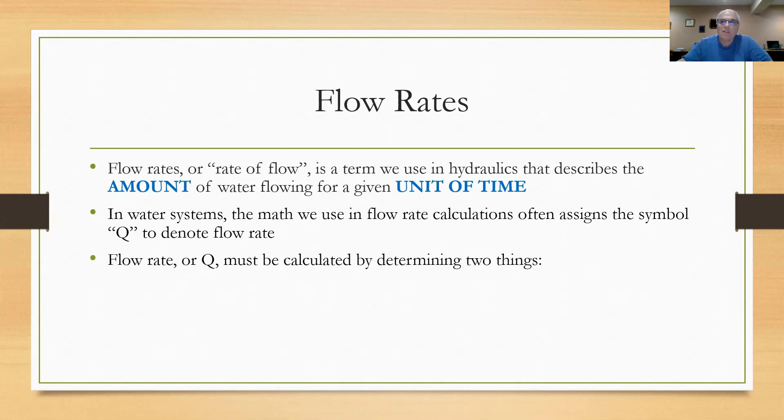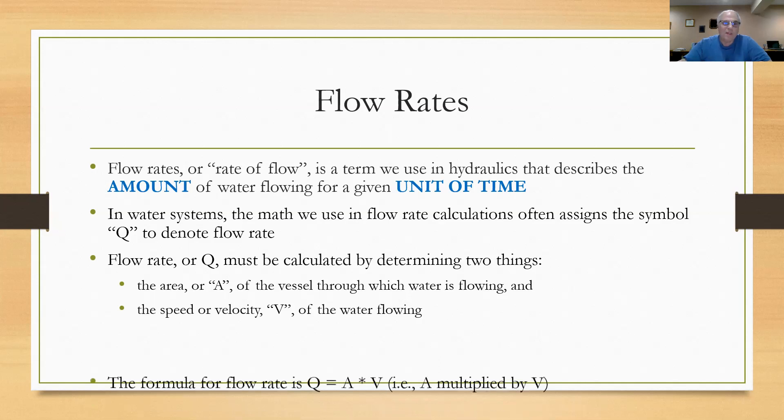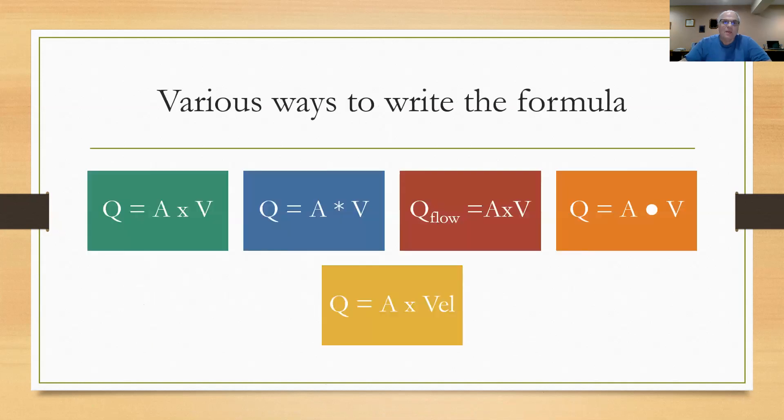So flow rate or Q has to be calculated by determining those two things. We have to get the area of the vessel that's carrying the water - it's either going to be a pipe or an open channel in a water plant. And we also have to know the speed or the velocity of the water that's flowing through that pipe or channel. So the formula that we use is Q equals A times V, the area multiplied by the velocity. They often write these formulas in different ways, but if you see any of these variations, it's really all the same thing: flow rate equals area times velocity.